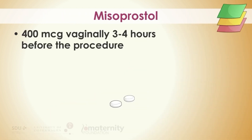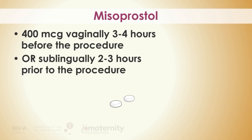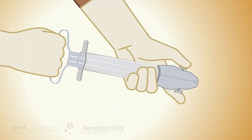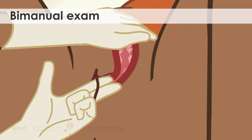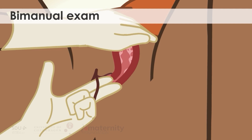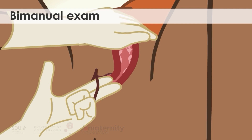Prepare the cervix by giving 400 micrograms of misoprostol either vaginally 3 to 4 hours prior to the procedure or sublingually 2 to 3 hours prior to the procedure. If you are using MVA, you should make sure that the aspirator holds a vacuum before starting the procedure. It is also important to perform a bimanual examination to have an accurate assessment of the uterine size and position before you start.